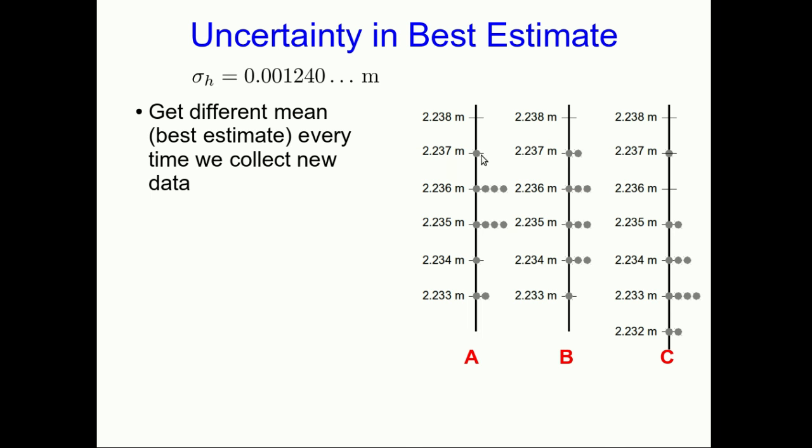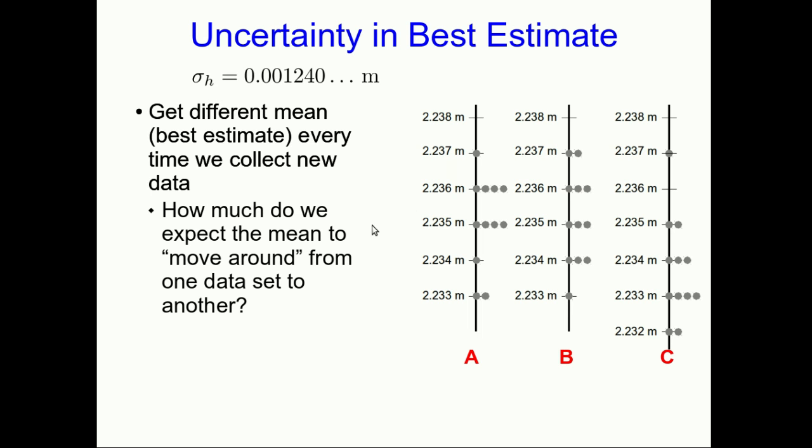So data set A is the one I've been working with. Data set B is another set of measurements I made. And you see, of course, it didn't come out quite the same. And so we can now start to talk about how much we expect the mean to move around. In these two sets of measurements, I get means that are very similar, but they're not quite the same. On the other hand, this measurement set C is not an actual set of measurements. This is one that I made up to illustrate a point. These arrows are indicating the standard deviations. And I've made a set of measurements where its mean is about a standard deviation away from the means of the other two.